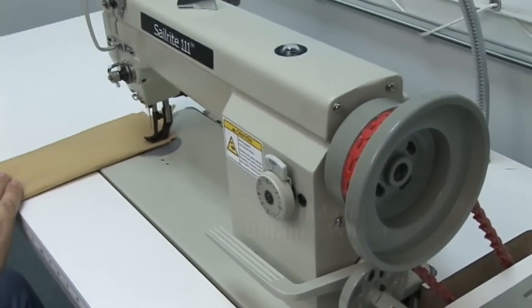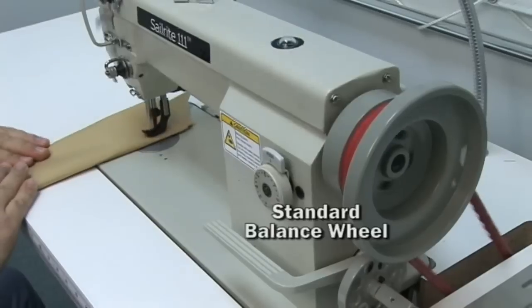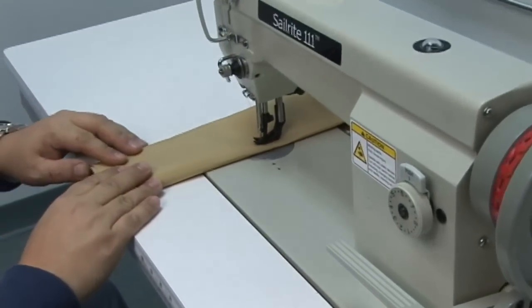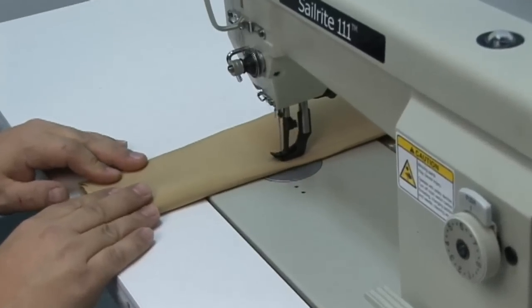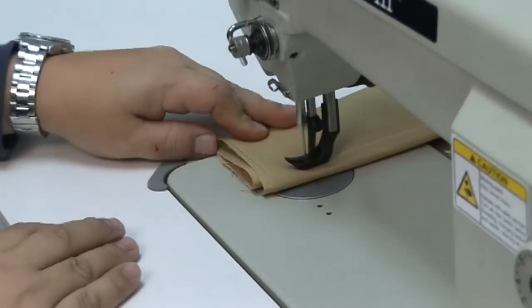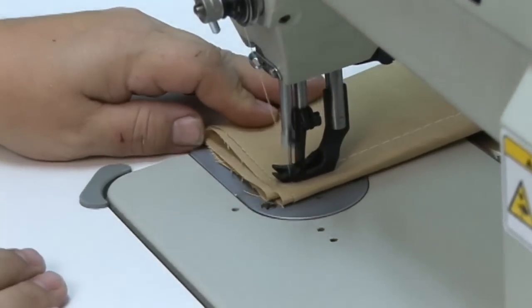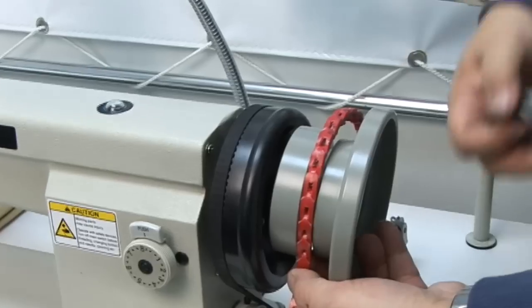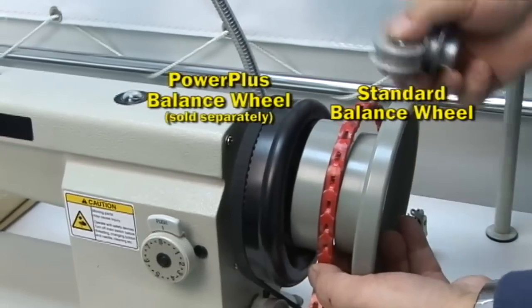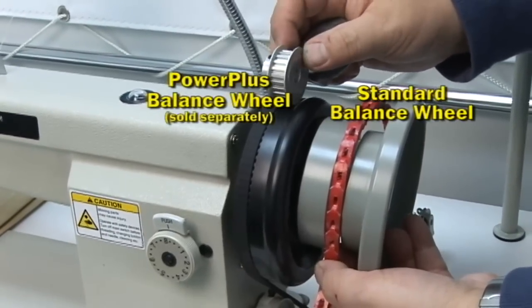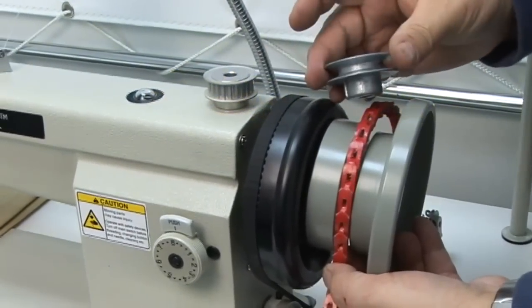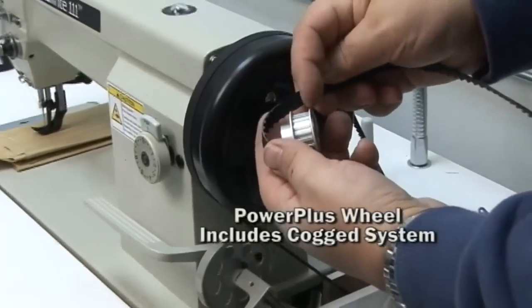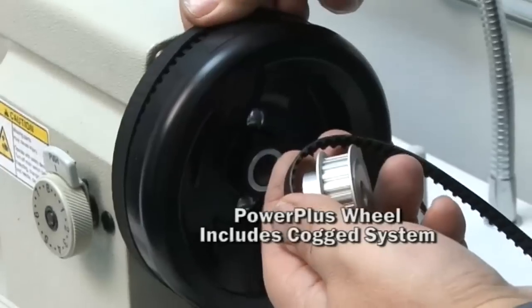So far everything in this video has been done with the standard balance wheel as seen here at the right of the sewing machine. If you want optimal slow speed control and extreme power in thick assemblies, you may want to consider adding the Power Plus balance wheel. This upgrade replaces the original balance wheel on the machine with a much larger one. The normal V-belt drive system is also replaced with a cog timing belt that absolutely prevents slippage.